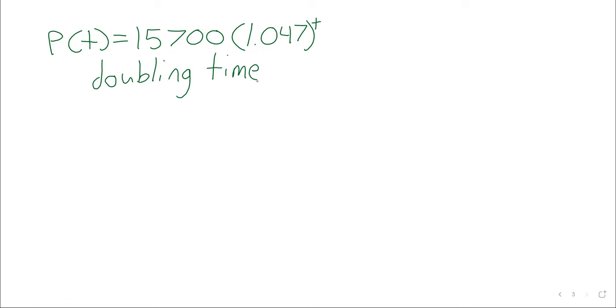Once you see this trick, it makes a lot of sense. The population starts at 15,700 people. What will the population be once it's doubled? 31,400. So if we want to know how long it takes the population to double, we want to know when the population will be 31,400. And that gives us an equation.